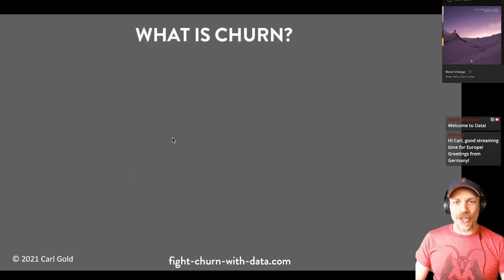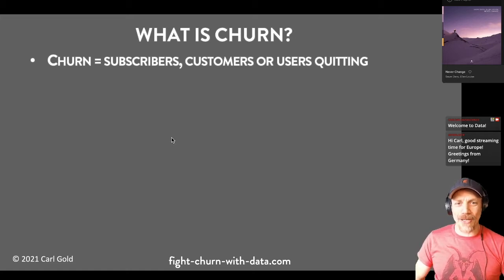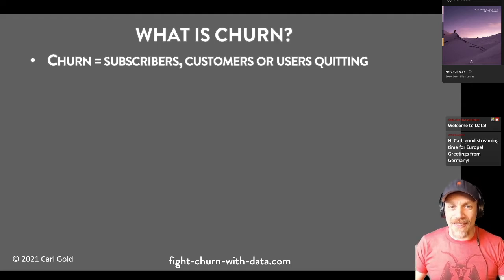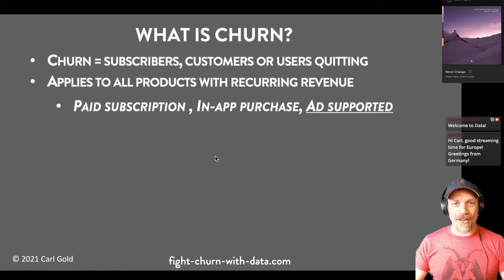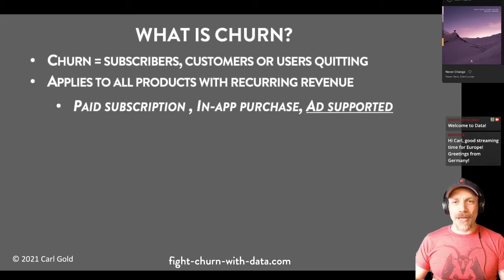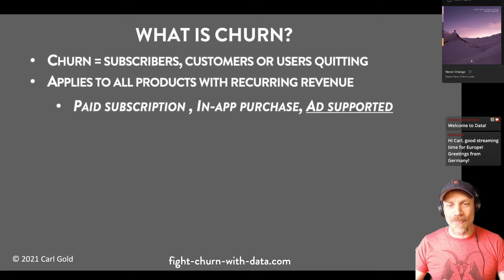So what is churn? Churn is when subscribers, customers, or users quit — they quit your product or service. Why? Because they've got other choices. We all have so many choices nowadays, and I think that's why there's such a churn problem — it's a problem of too much choice. This is a problem for any product with recurring revenue, which means repeat purchases. It could be a paid subscription like subscribing to a Twitch channel or to a product like Microsoft Word, a free subscription supported by ads like YouTube, or in-app purchases.